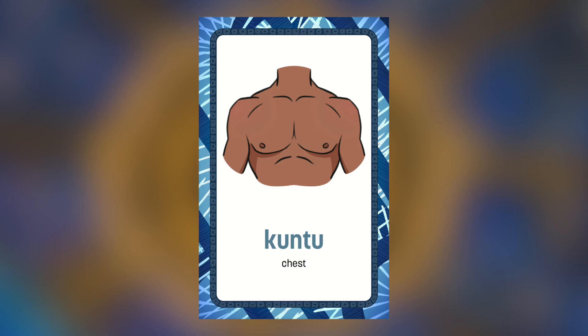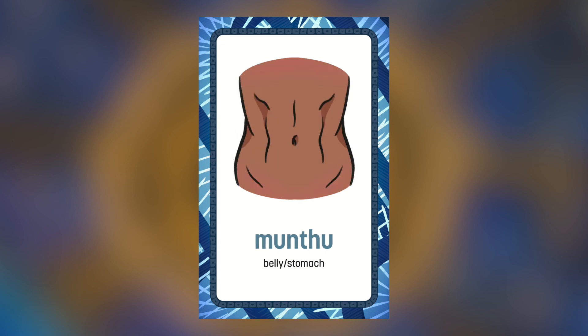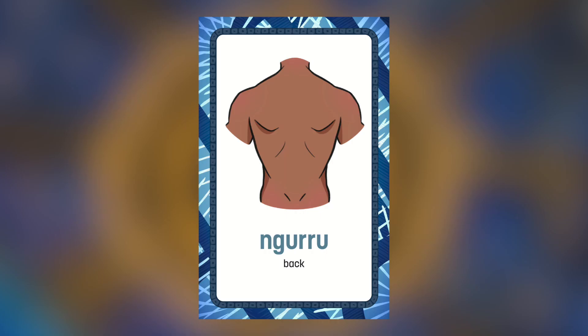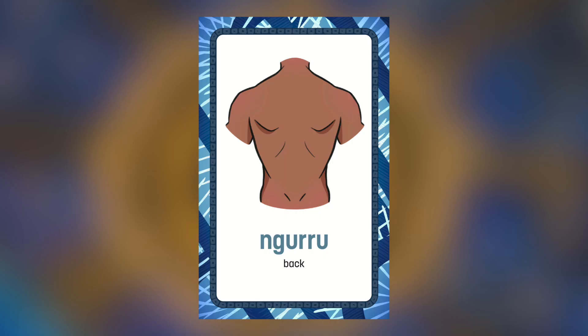Around the middle of the body is kūndu, chest — kūndu. Mūndu, which means belly or stomach — mūndu. And the word for back is ngūru — ngūru. Kādaka is shoulder — kādaka.